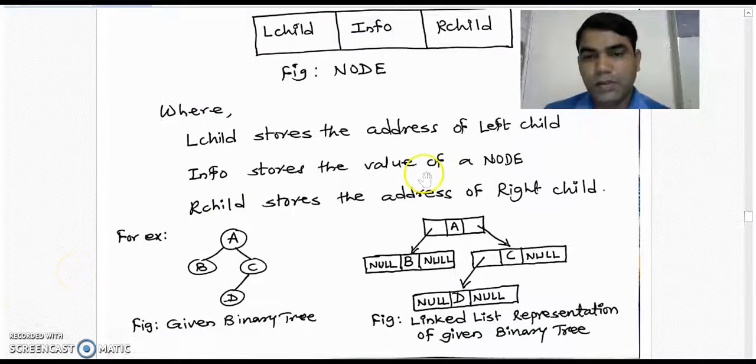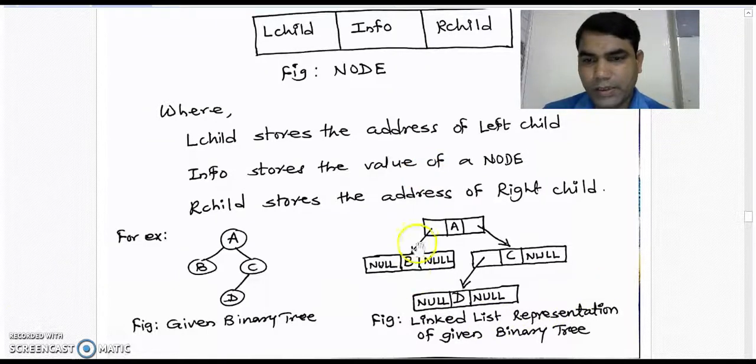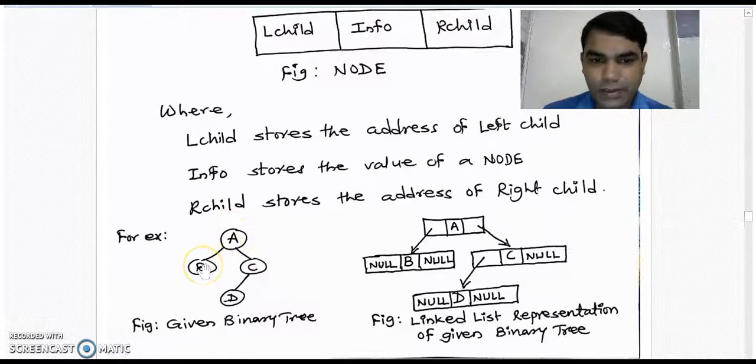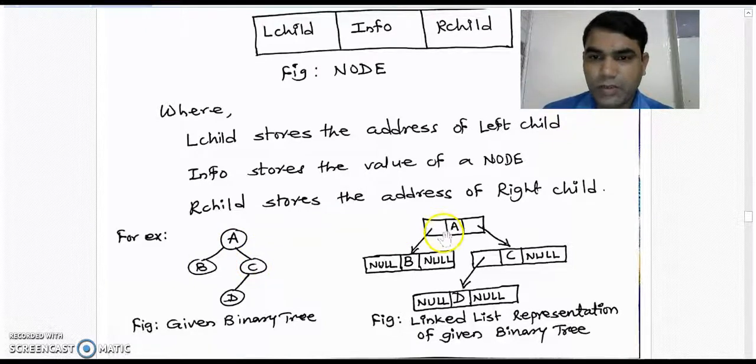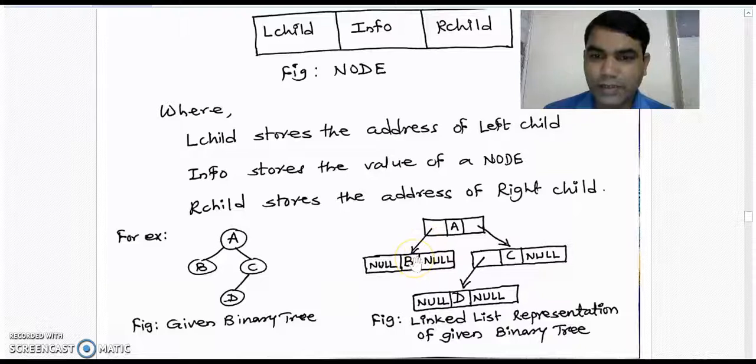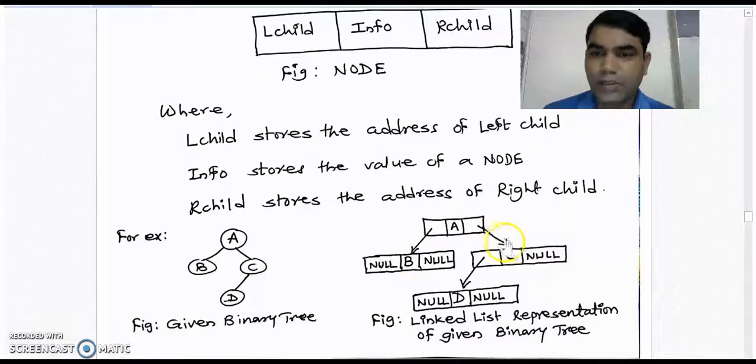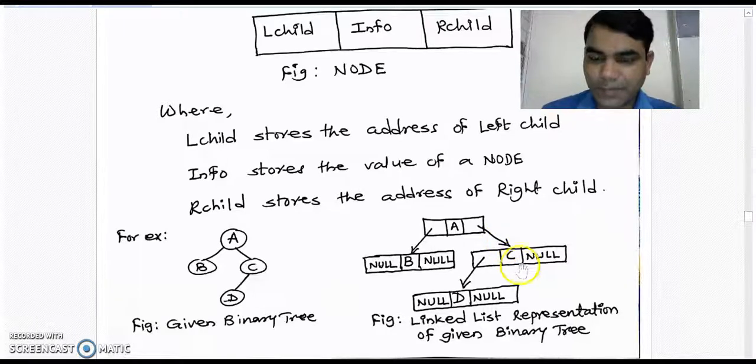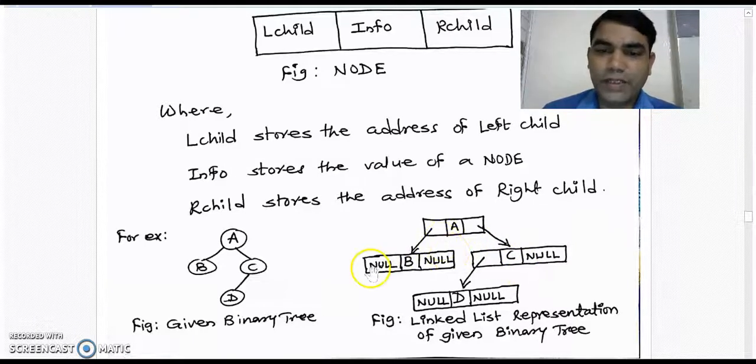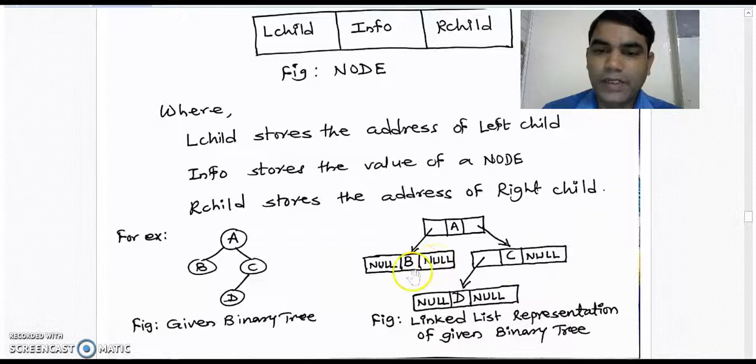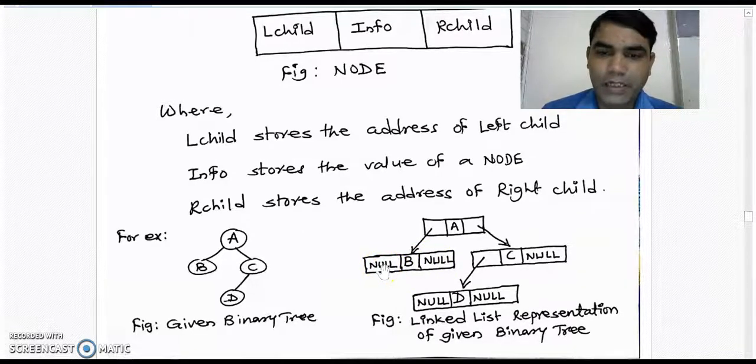For example, this is the linked list representation of this given binary tree. Now if you see, A has left child that is B and C towards the right side. So there will be a pointer which pointing towards left hand side and it is node B. There is another pointer which points to the right hand side at node C. If there is no left child and right child, we represent that part by null.